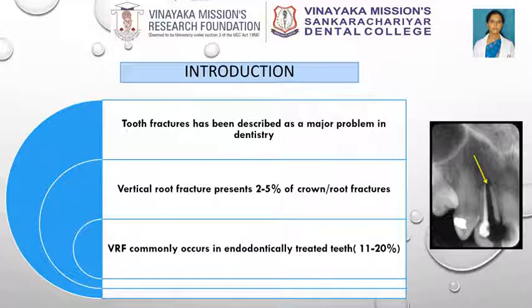Vertical root fracture commonly occurs in endodontically treated teeth, around 11–20%. In molar teeth, the fracture is most commonly buccolingual in orientation in individual roots.